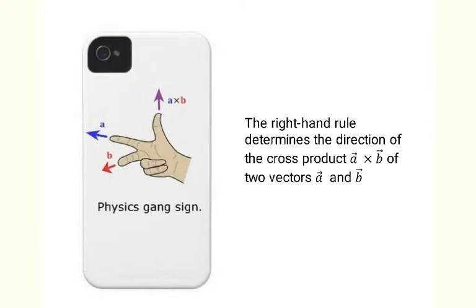The right-hand rule determines the direction of the cross product vector A cross B of two vectors A and B as illustrated in this diagram. We will practice with applying the right-hand rule during the class.